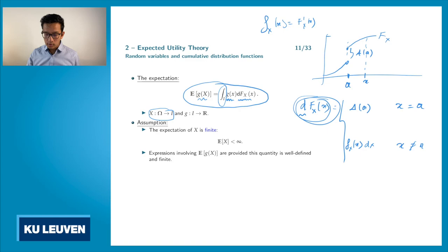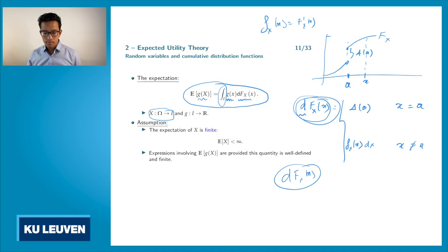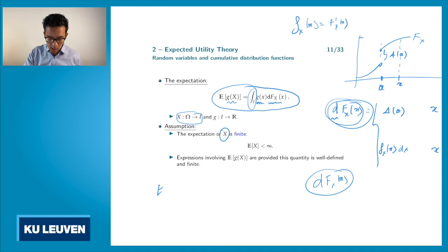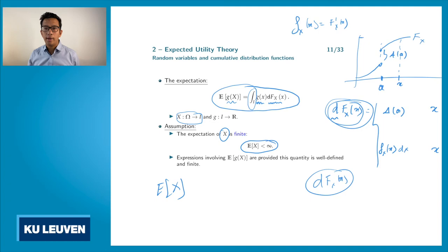You can think of dF_X(x) as the probability that the random variable X takes the value small x. What we assume is that the expectation of X — E[X] — is always finite. So on average, the random variable X takes on a finite value.